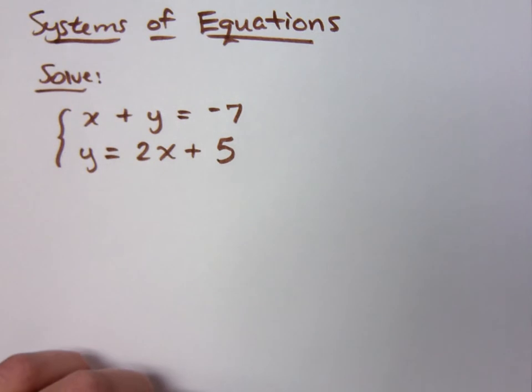This is a system of equations. Remember a system of equations, what we're basically looking for is where these lines intersect. Now, we have ways of solving this. One way is by graphing, but graphing is not always the easiest thing because solutions are not always integers. They're not always showing up in the graphing window.